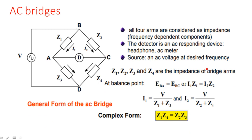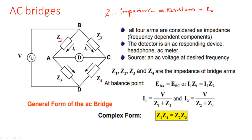This is the AC bridge network with Z1, Z2, Z3, Z4. In DC bridges we used R1, R2, R3, R4, but here we use Z1, Z2, Z3, Z4. Z is nothing but impedance. Impedance is resistance plus reactance — it may be R plus j·XL or R minus j·XC, depending on whether we are doing a capacitance measurement or inductance measurement.